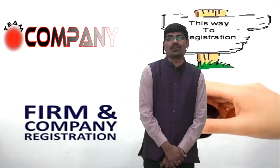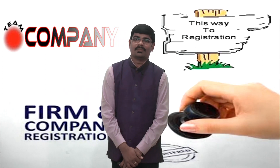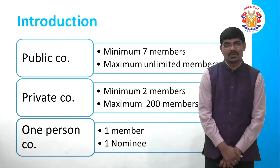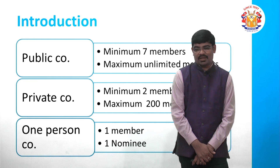Before learning incorporation of a company, you should have an idea of one basic logic: in a public company, minimum 7 members and maximum unlimited; in a private company, minimum 2 and maximum 200; and in a one person company, one member and one nominee is required.